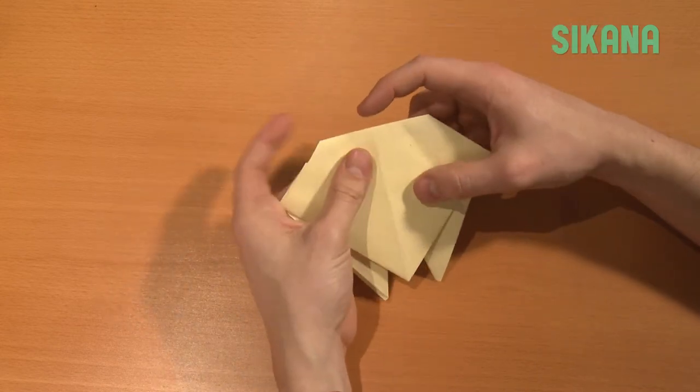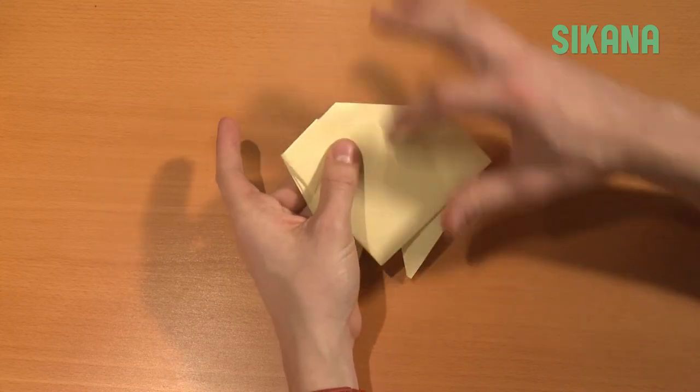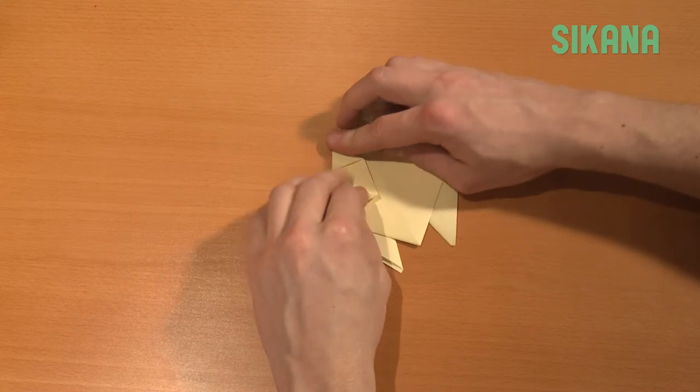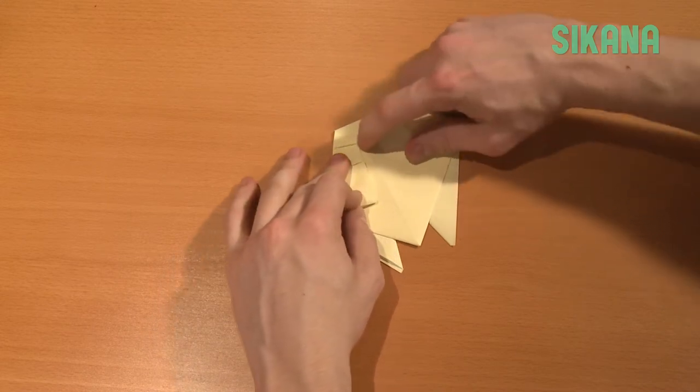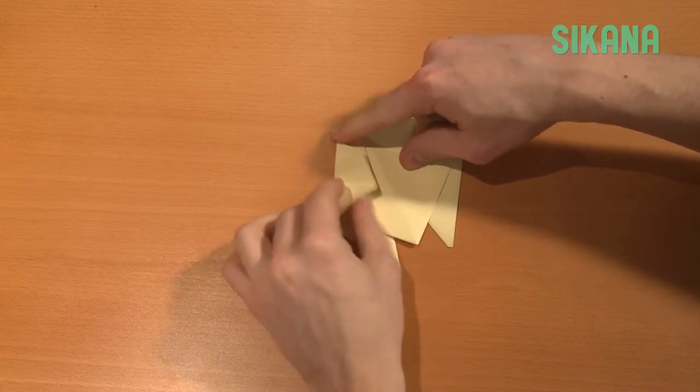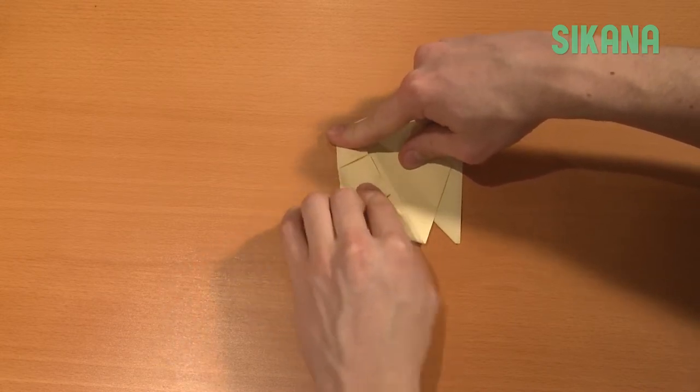Once you have this shape, flip the origami and fold this part close to the center line. Leave a little space and try to keep folds as parallel as possible.